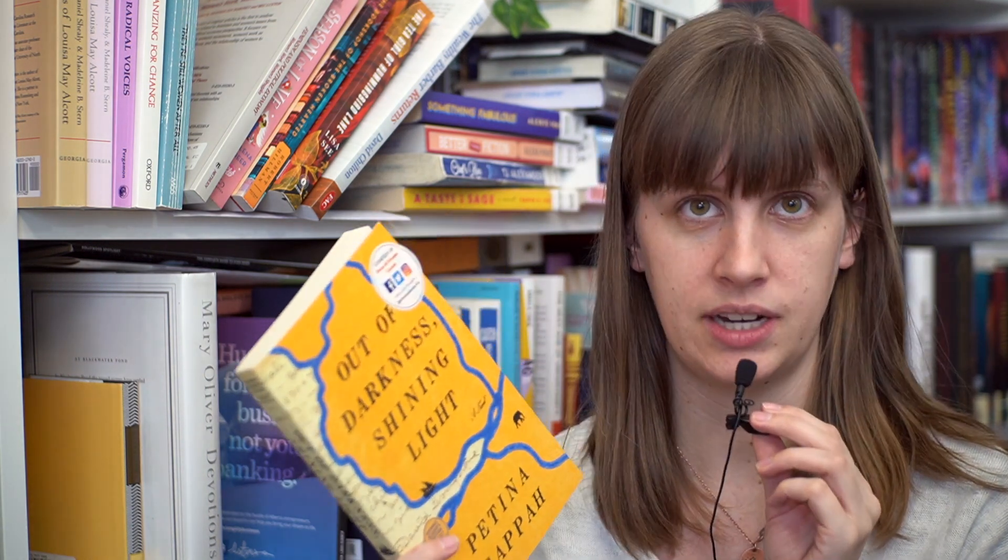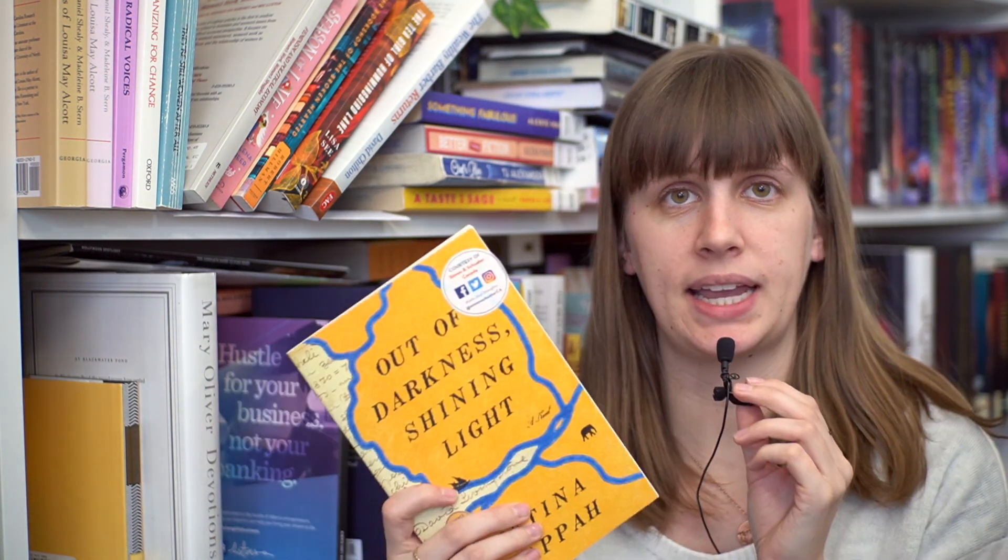I have Darkness Shining Light by Patina Gappa. This is an arc that I've had for four years now. This is from 2019. This is about like exploration in 19th century Africa when a doctor like dies and so the people he was traveling with carry his body and like all his possessions like across the continent of Africa so that he can be buried in his homeland which sounds kind of interesting. I need to like do something that'll force me to read these books.